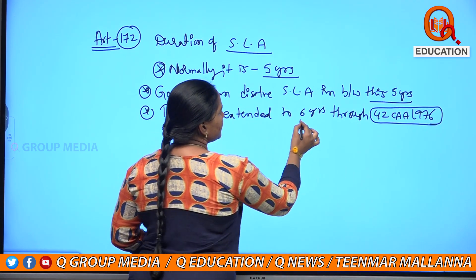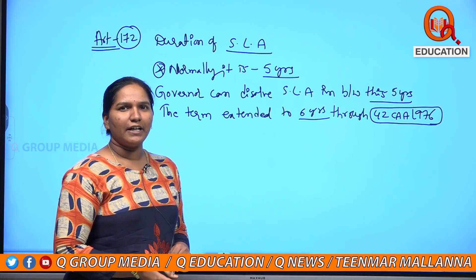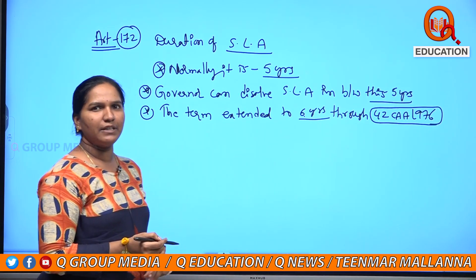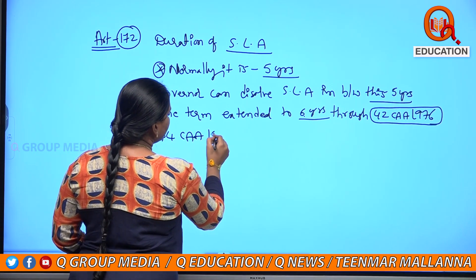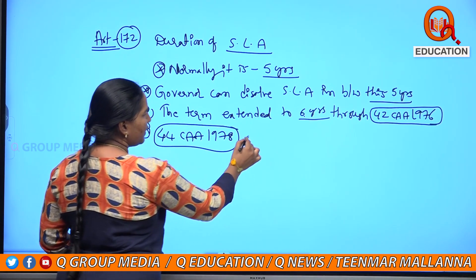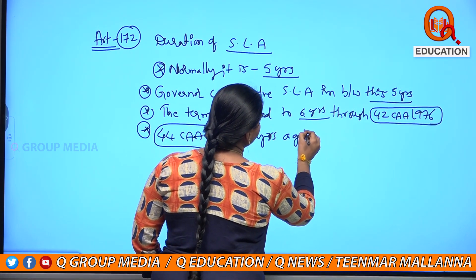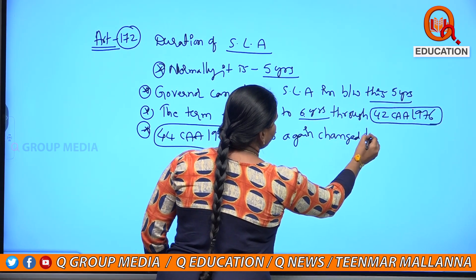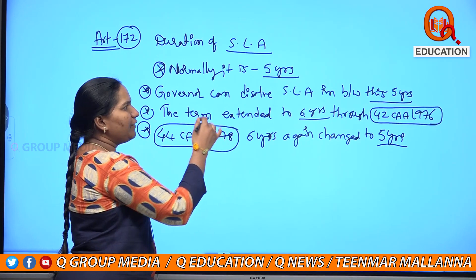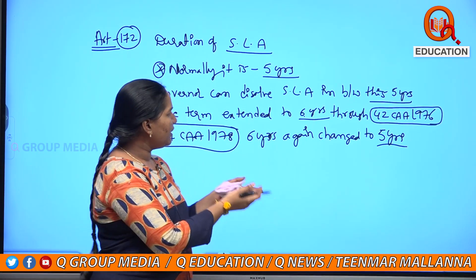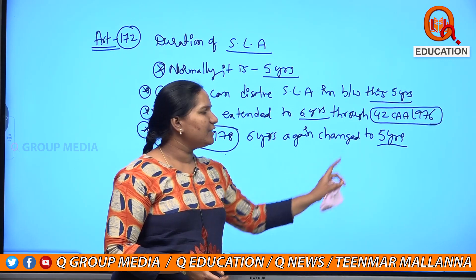Actually, the 5-year term was changed to 6 years by the 42nd Constitutional Amendment Act in 1976. After 2 years, the 44th Constitutional Amendment Act in 1978 changed it back into 5 years.